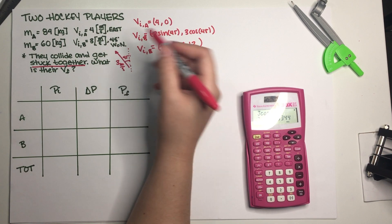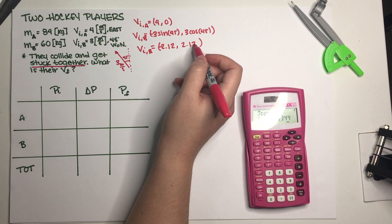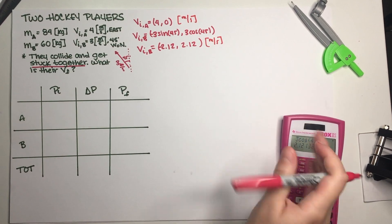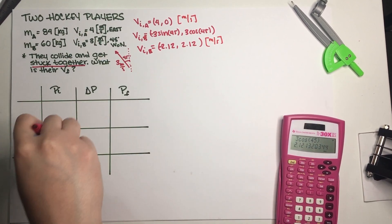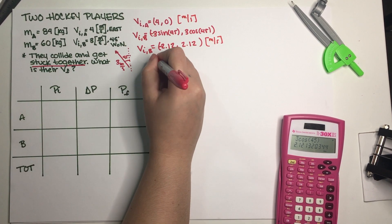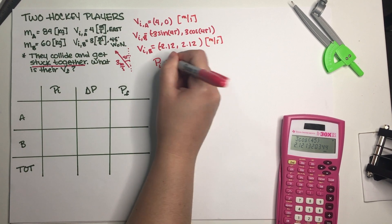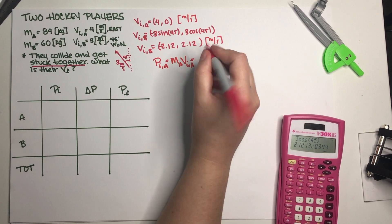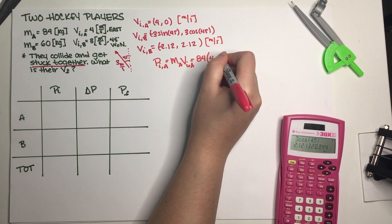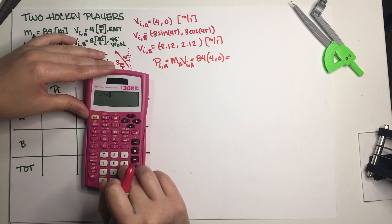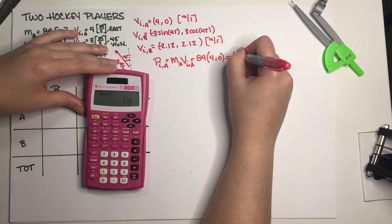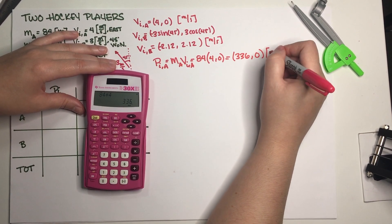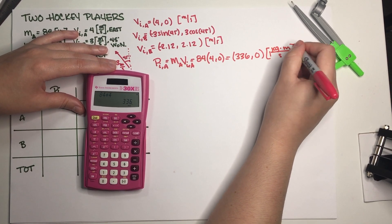Now we have both initial velocities, so the next step is to multiply by their masses to get their initial momenta. The initial momentum for A is mass A times velocity initial A: 84 times 4 equals 336 on the x-axis, and 84 times 0 equals 0 on the y-axis. Units are kilogram meters per second.